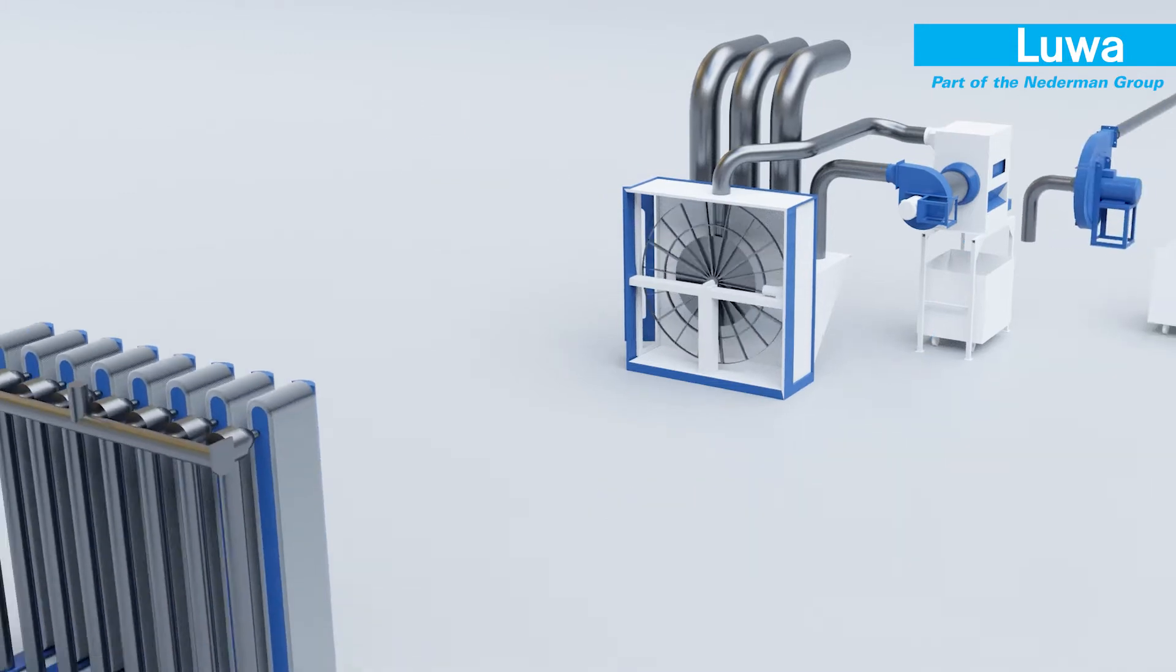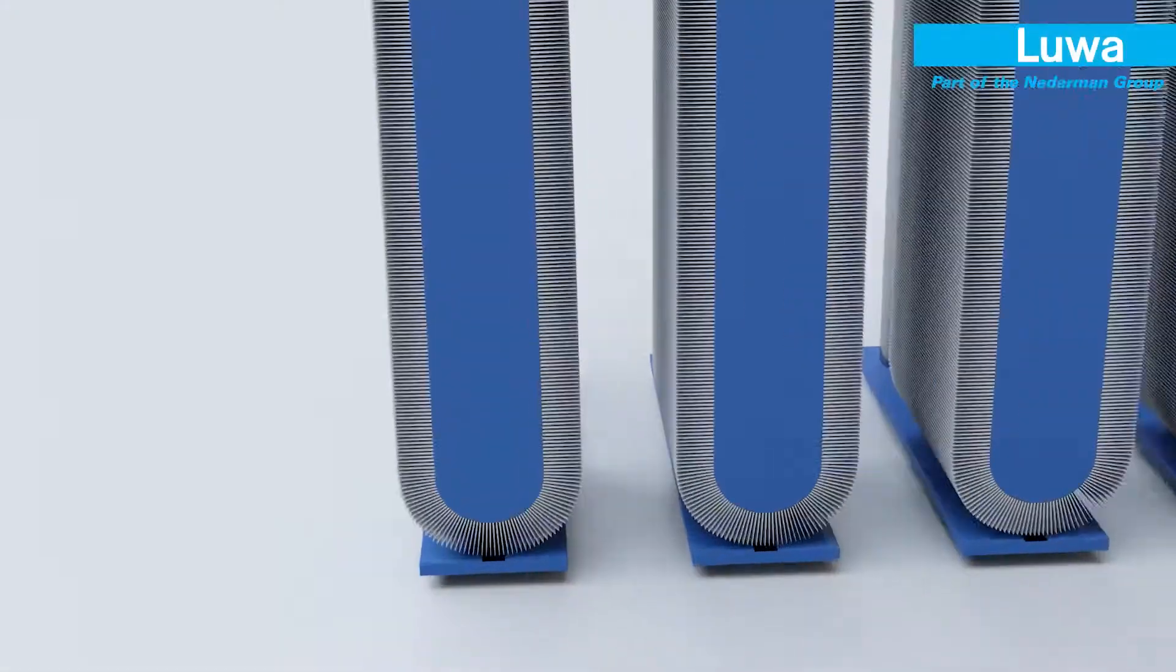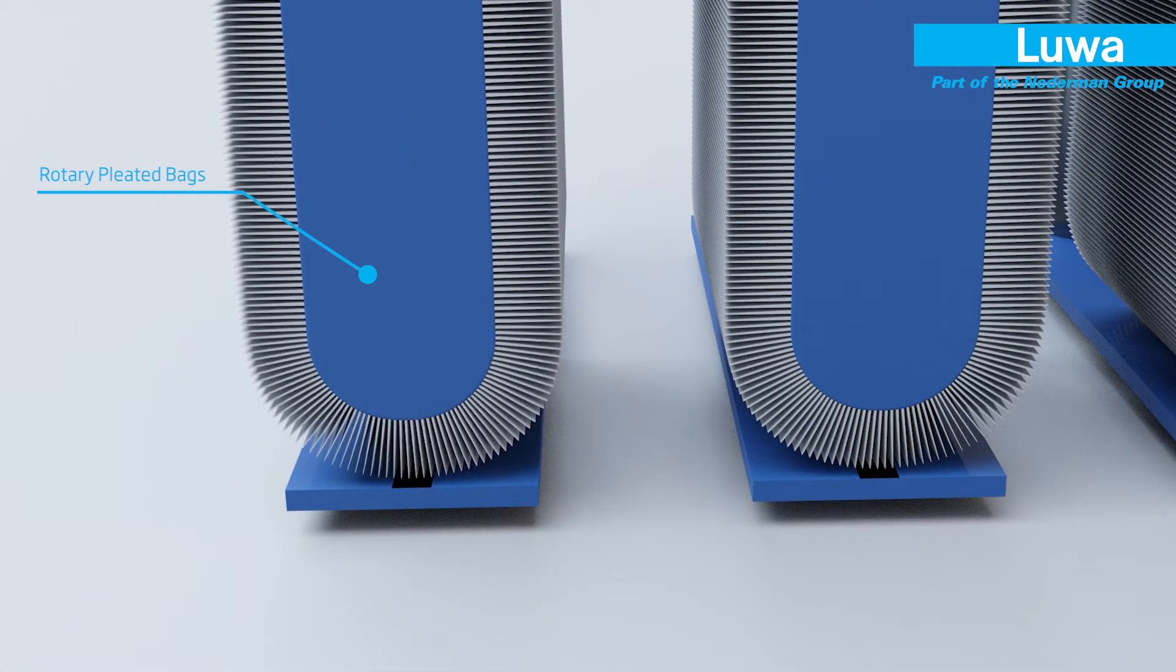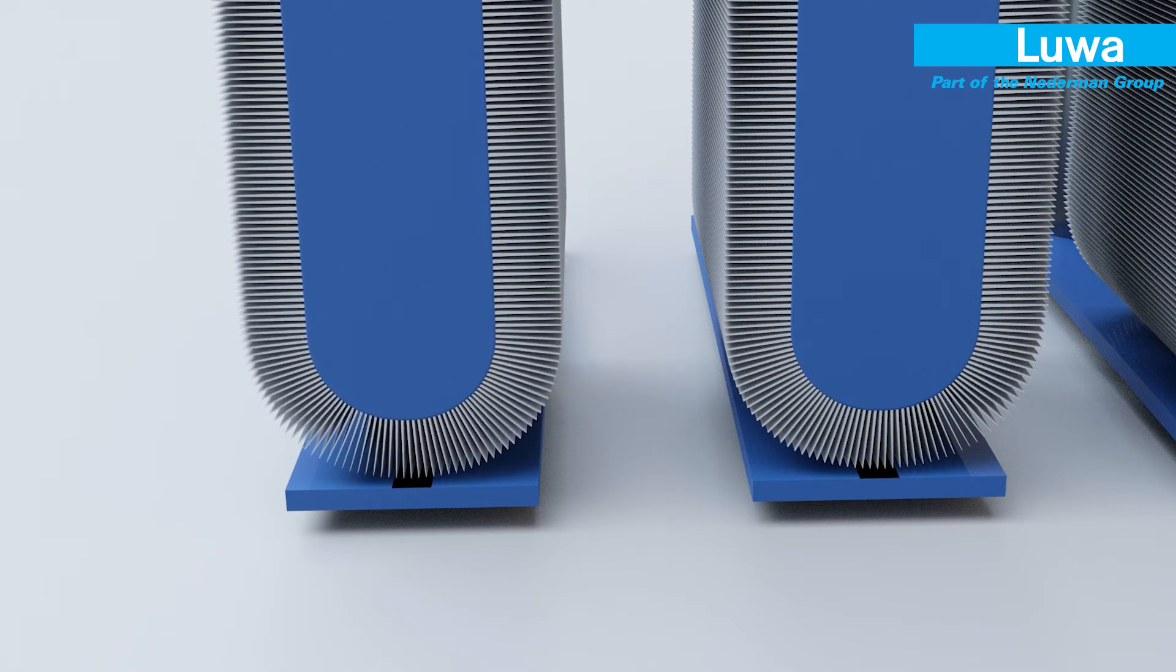The dust then enters the LUO rotary pleated belt filter. Dirty air enters through each filter cell, where large fibers collect on the outside of the pleats, while smaller particles collect between the pleats.